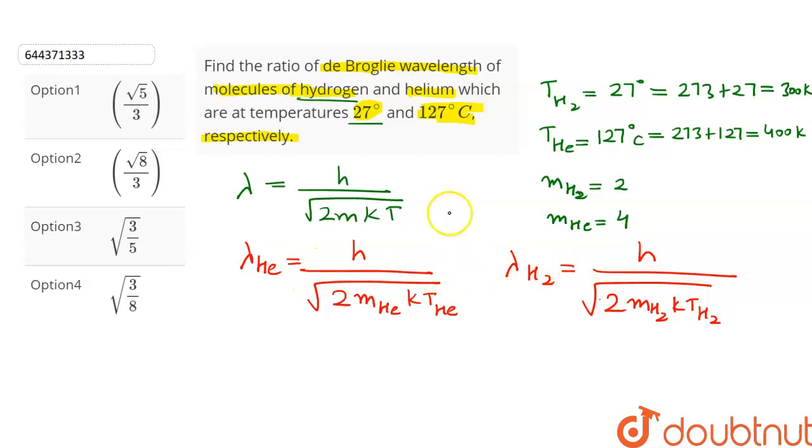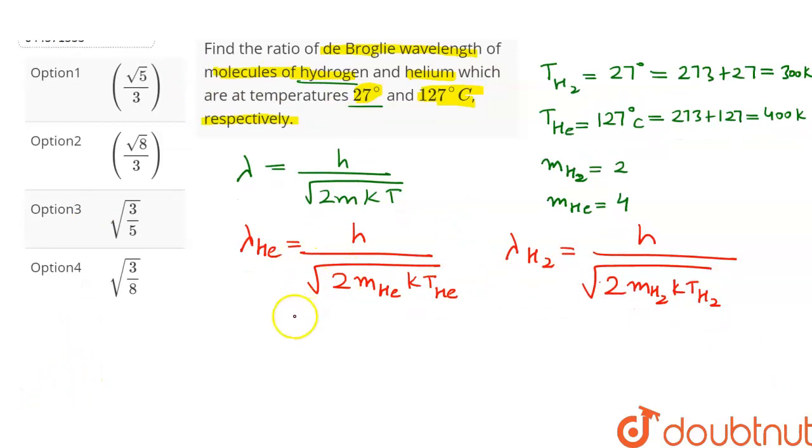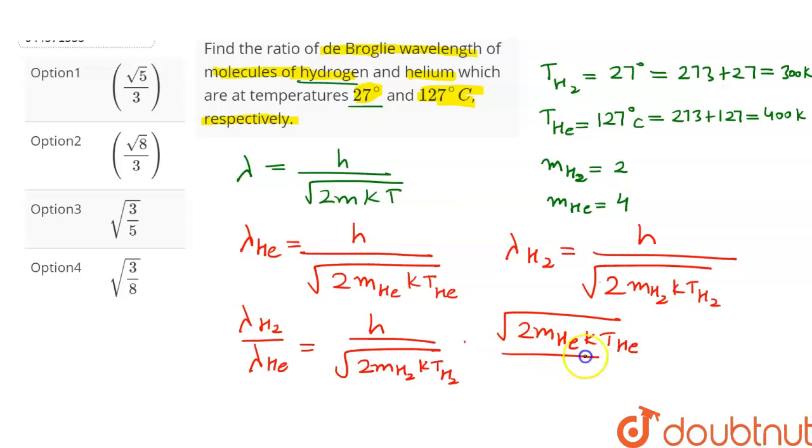Let's divide these two equations. From here we can write lambda H2 upon lambda He is equal to h upon under root of 2m_H2 into k into T_H2 into under root of 2m_He k into T_He divided by h. h will get cancelled, under root 2 also gets cancelled and k also gets cancelled.